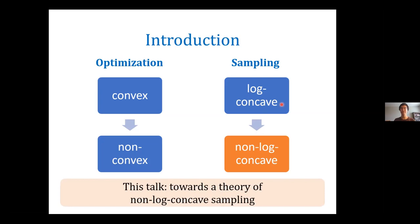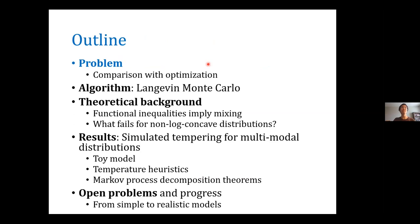In this talk, I'll work towards a theory of non-log-concave sampling. Here's an outline: I'll first introduce the sampling problem and build on this analogy with optimization. I'll introduce the basic algorithm for sampling called Langevin Monte Carlo, which you can think of as an analog of gradient descent. I'll go over the theory that's known — how it applies for log-concave distributions and the challenges in going beyond. Next I'll go through our results on using simulated tempering to sample from multimodal distributions, focusing on our new Markov process decomposition theorems. Finally, I'll go over some open problems and recent progress.